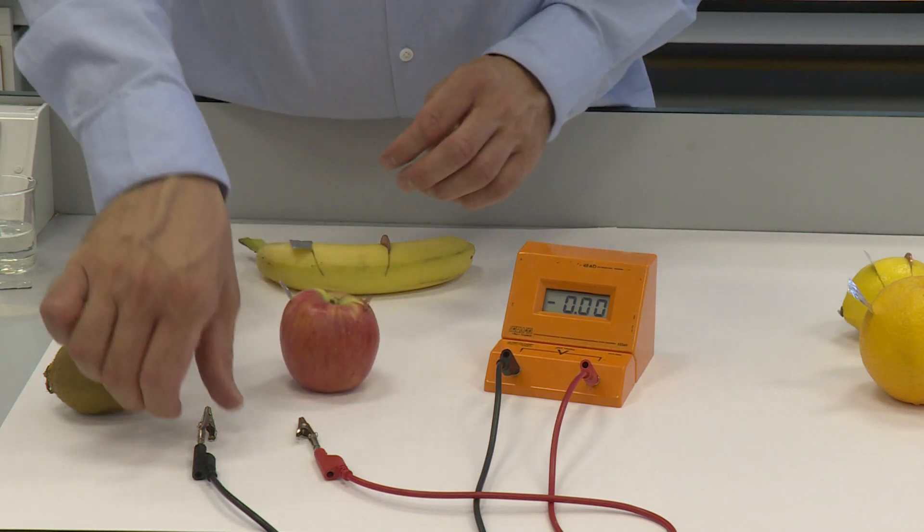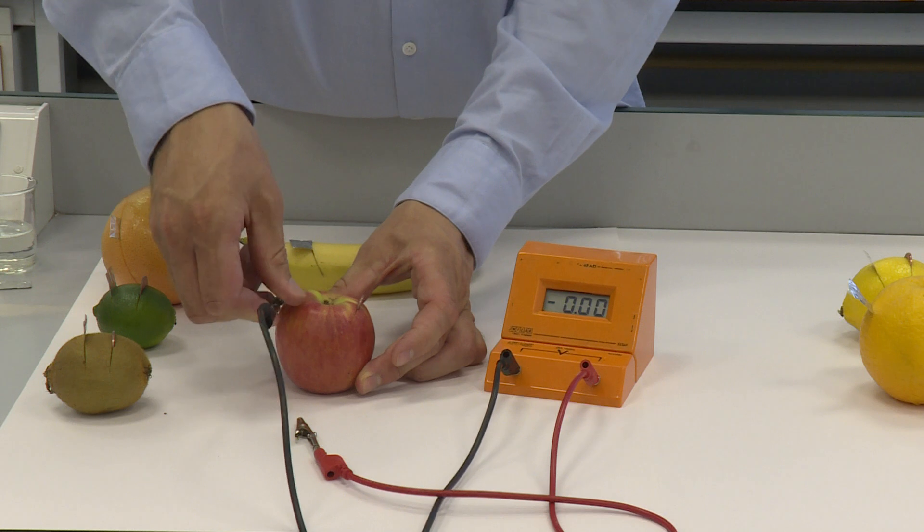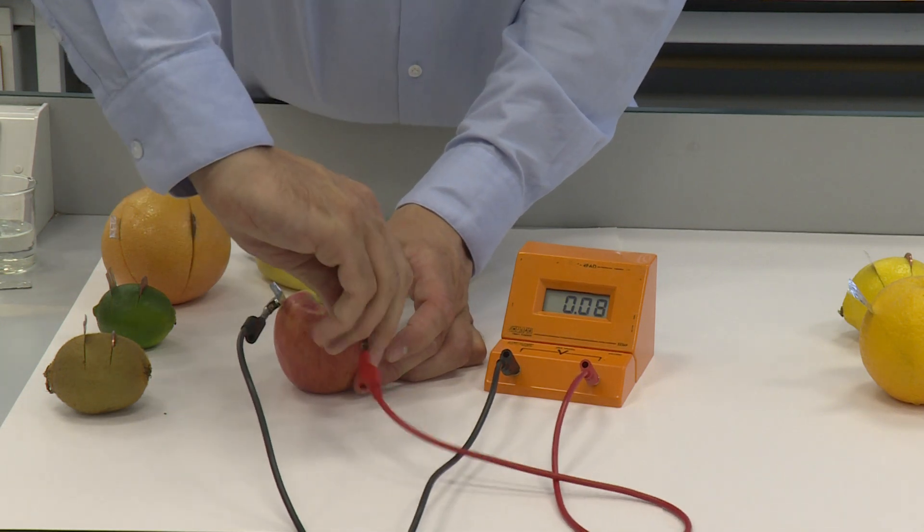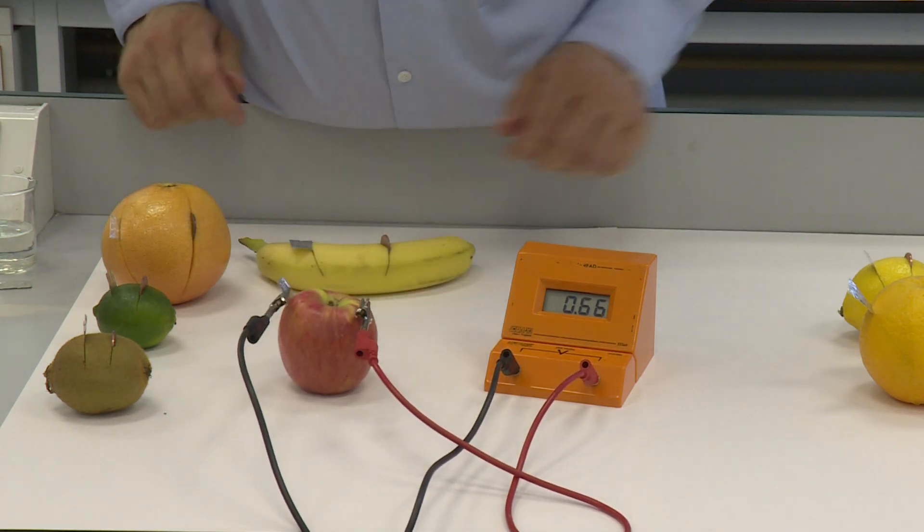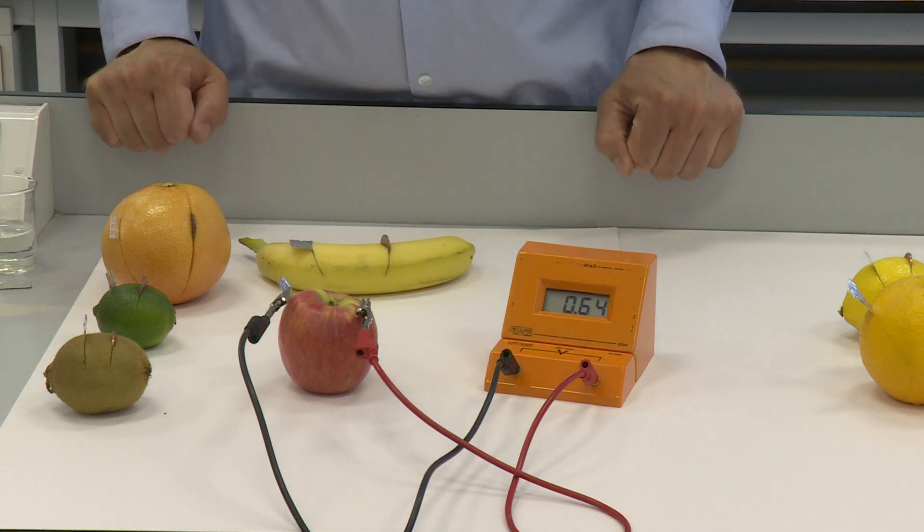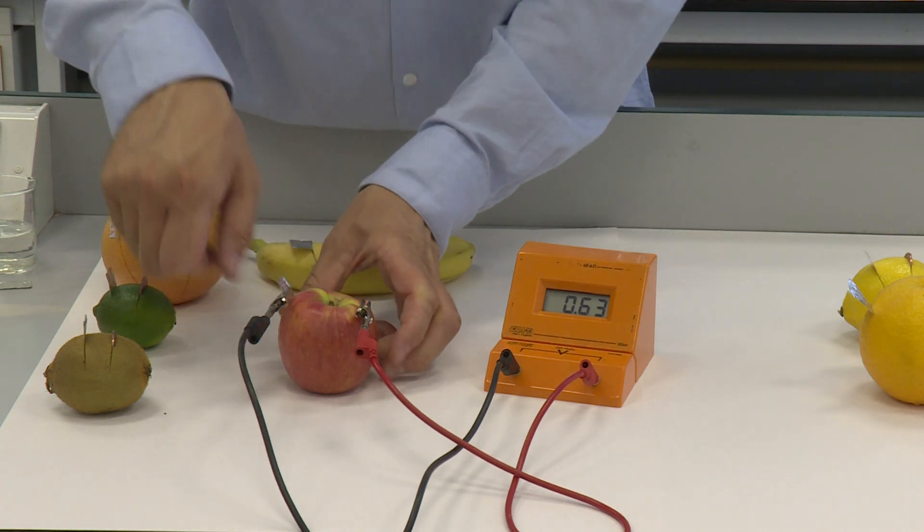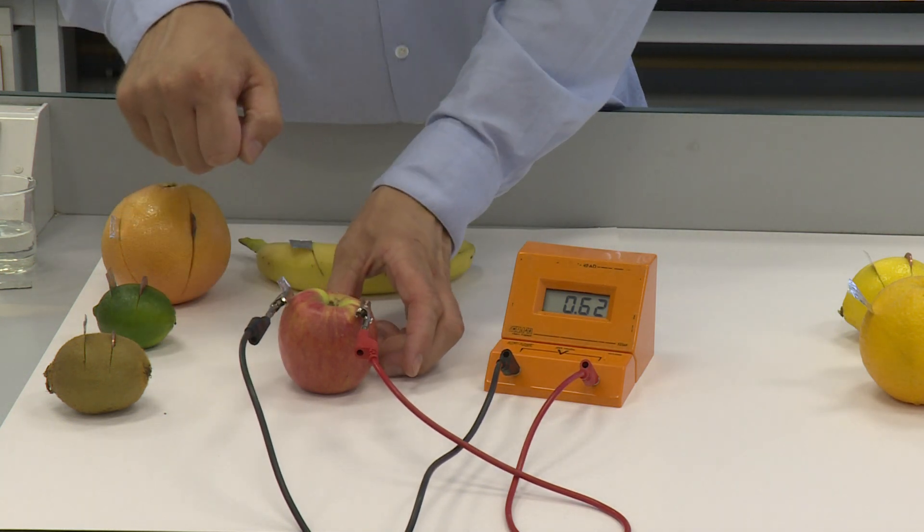We'll go for the apple next. Do we think this is going to be higher or lower than the citrus fruit? 0.65 for the apple. Oh, I would say 0.63 actually.